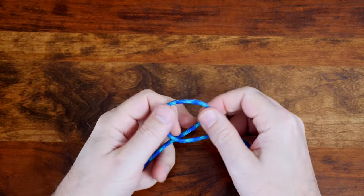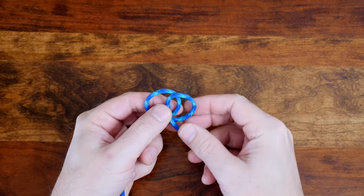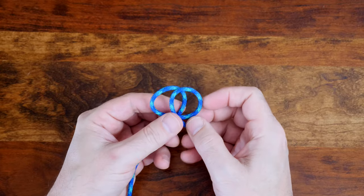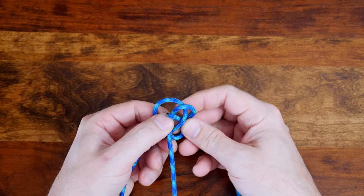The Celtic Button Knot is a historic decorative knot that's easy to tie. It's a stopper knot that's tied on a single piece of rope and results in a spherical decorative knot with a nice pattern.